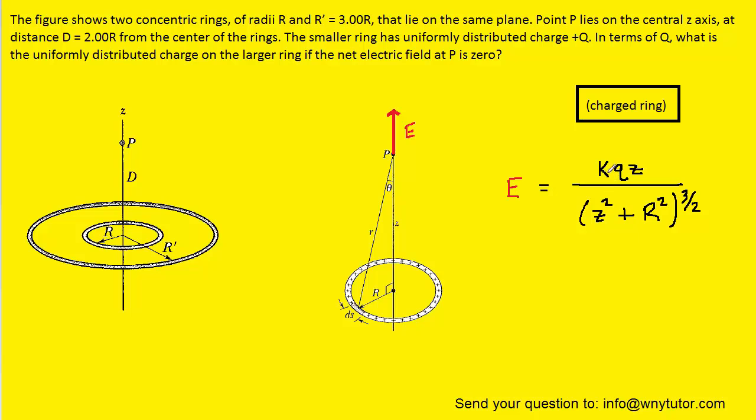We want to make sure we understand all the variables in this equation. K is a constant that we know is equal to 8.99 times 10 to the 9th. Q, of course, would be the total amount of charge that's present on the ring.